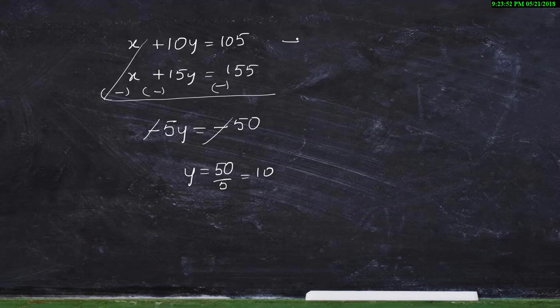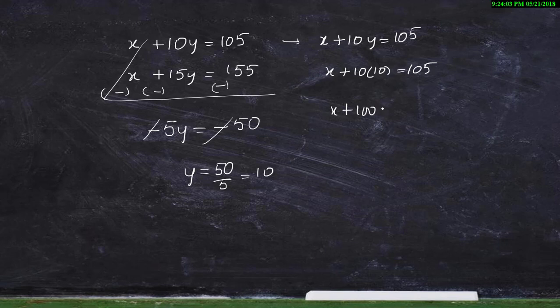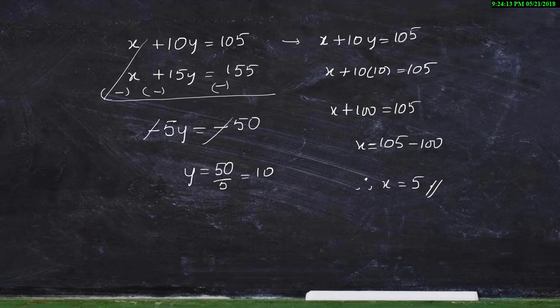Now substitute the value y equals 10 into the first equation: x plus 10y equals 105 becomes x plus 10 into 10 equals 105, so x plus 100 equals 105, therefore x equals 105 minus 100, which gives x equals 5.